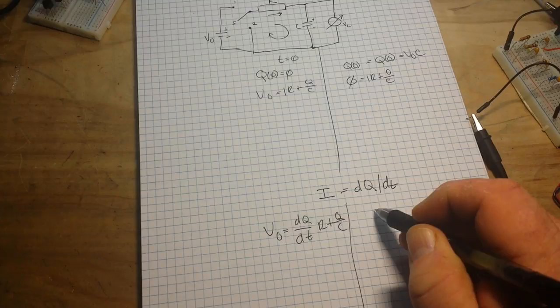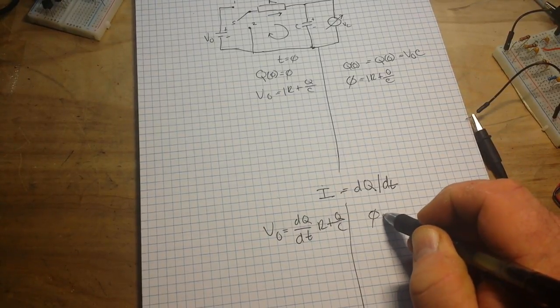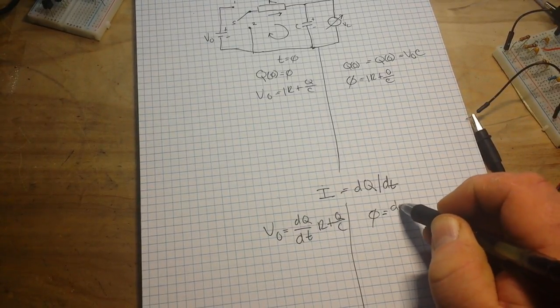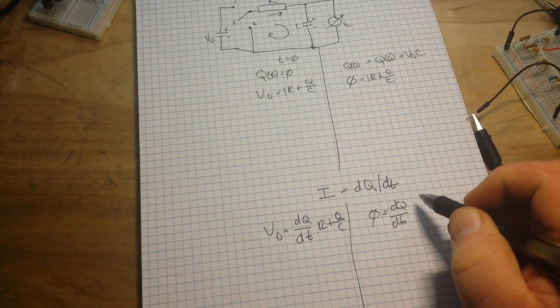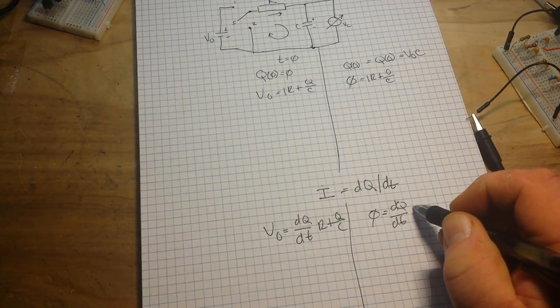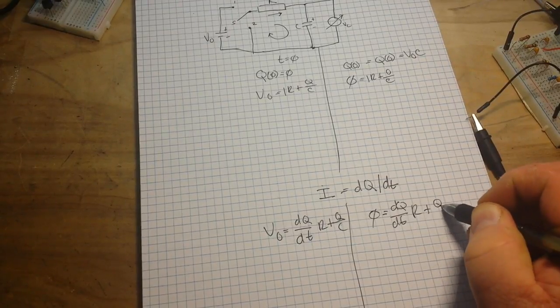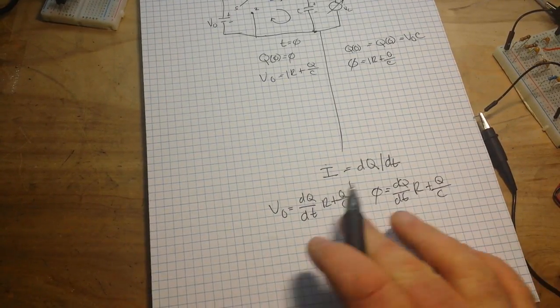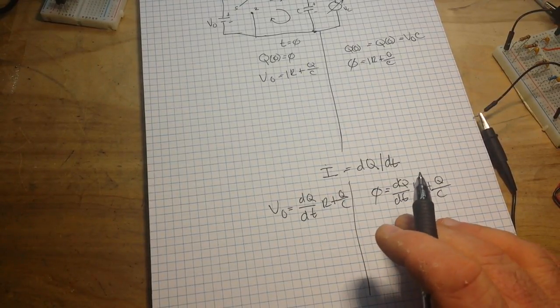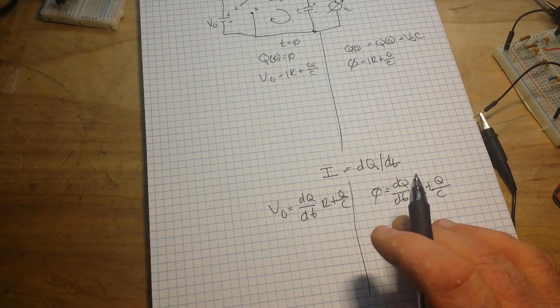And then over here again, we can say zero, our discharge state is equal to DQ over DT times R plus Q over C. You see, all we've done is we've taken the charge and the discharge and we've kind of made them work together.